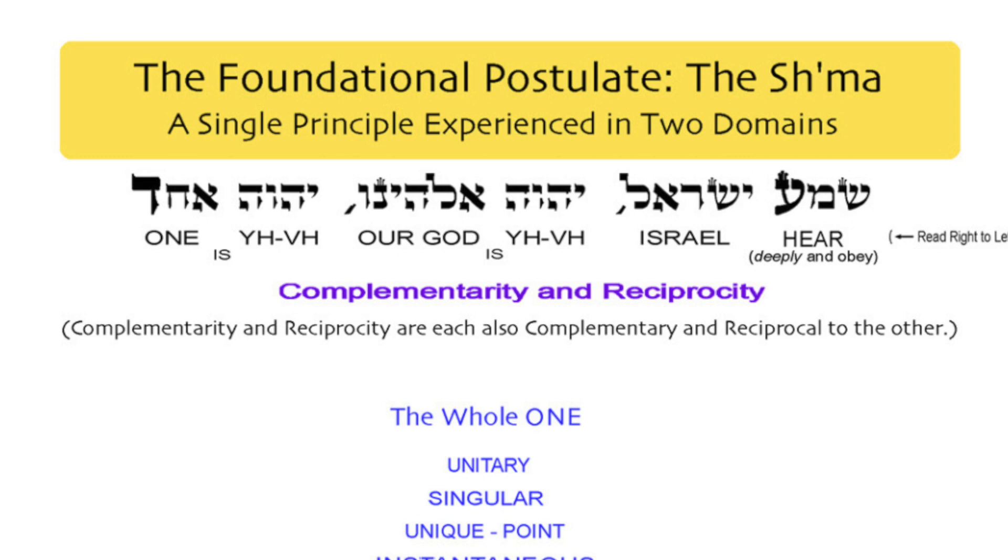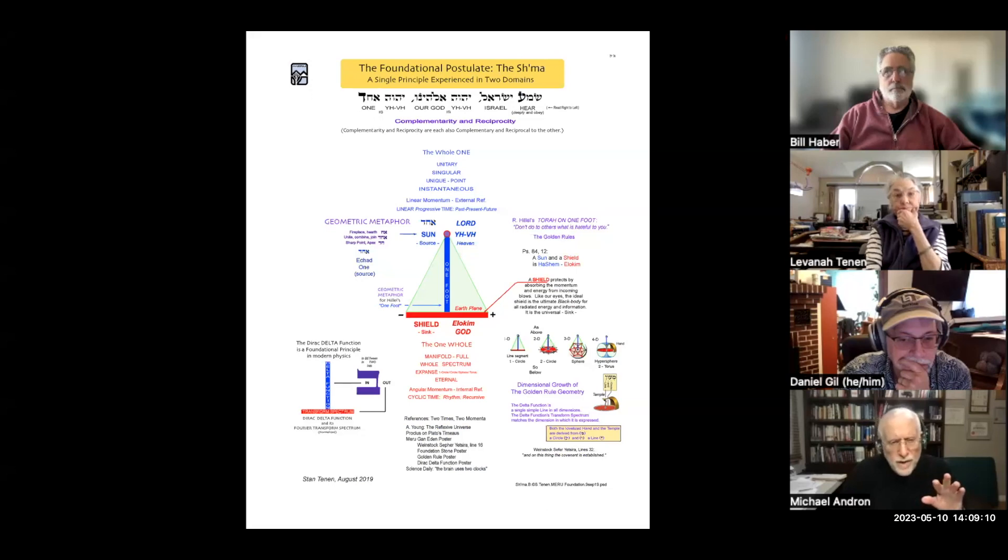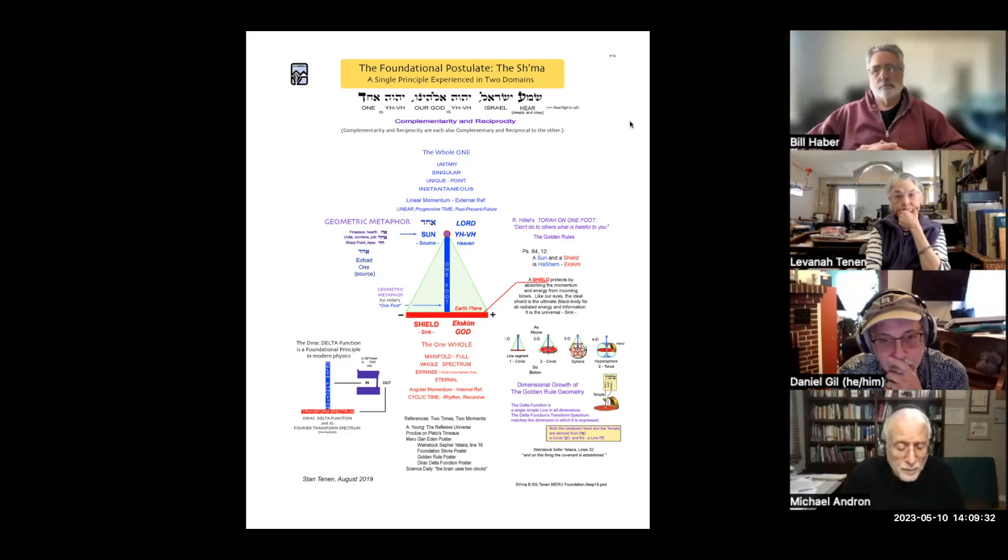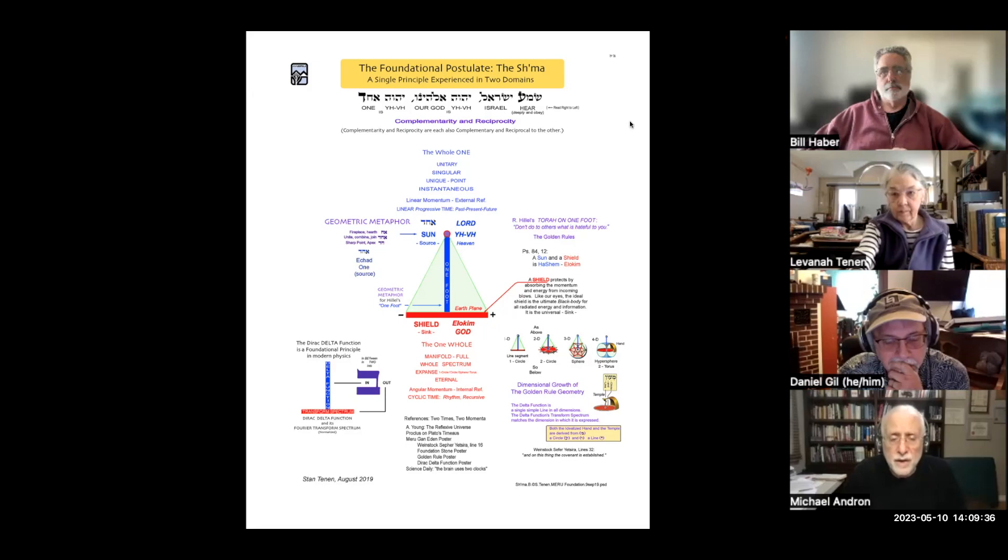And it's interesting, as you can see on the chart, the ayin, the last letter of the word Shema, is written large, as is the last letter of the word Echad. So those two letters spell out the word Eid, which means witness. We, the Jewish people, the Yisrael, Israel, the people of Israel, are to be witnesses.